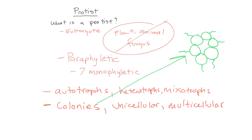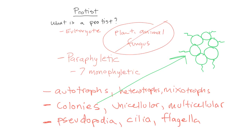How else did we categorize our different protists? Transportation. What were our different options? Pseudopodia — the false foot. What group used that form of locomotion? Amoebas. Good. So pseudopodia, cilia, and flagella — we've talked about them multiple times. Cilia are also found in different cells and tissues in your body, like in your lungs.